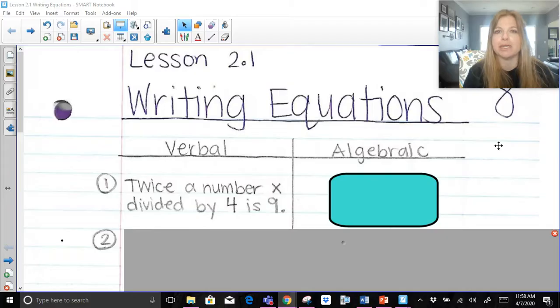We're going to start off by writing equations and translate this first sentence. My first sentence says twice a number x divided by 4 is 9. Now, twice a number means that we are multiplying by 2. So twice a number x divided by 4, that whole phrase, twice the number x divided by 4 is 9.